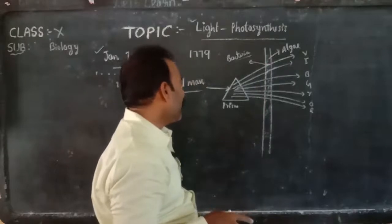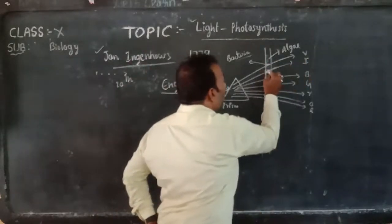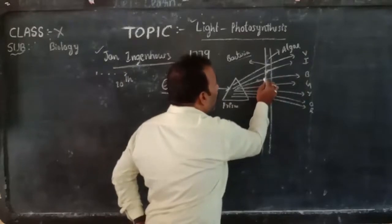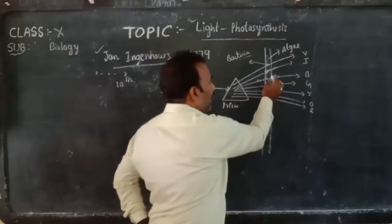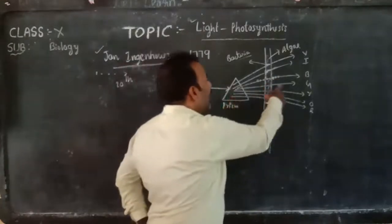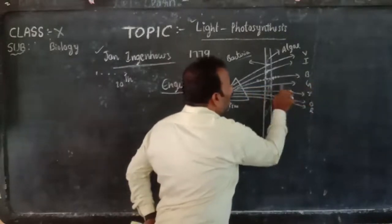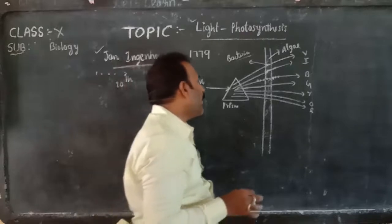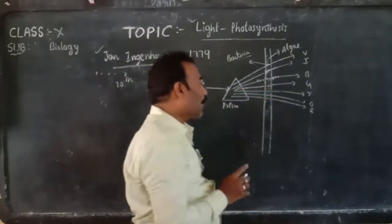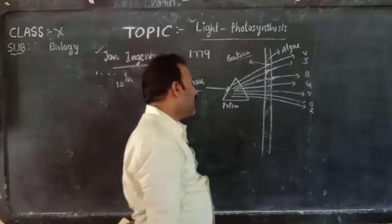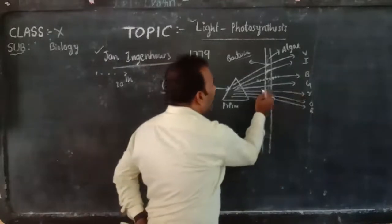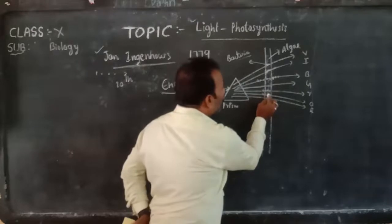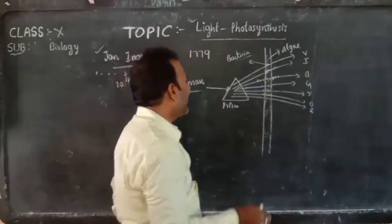In the path of indigo light, only a few bacteria accumulated. When he exposed blue light, more bacteria accumulated on the path of blue light. Next, when he exposed green light, no bacteria accumulated at all, because green light is reflected by the chlorophyll pigment. For yellow and orange light, only a few bacteria accumulated.